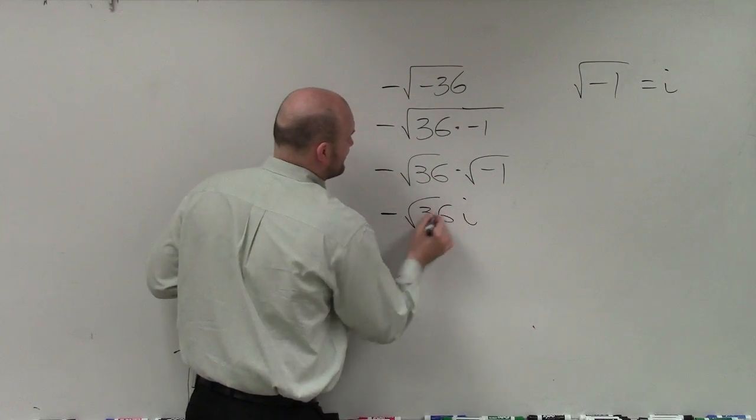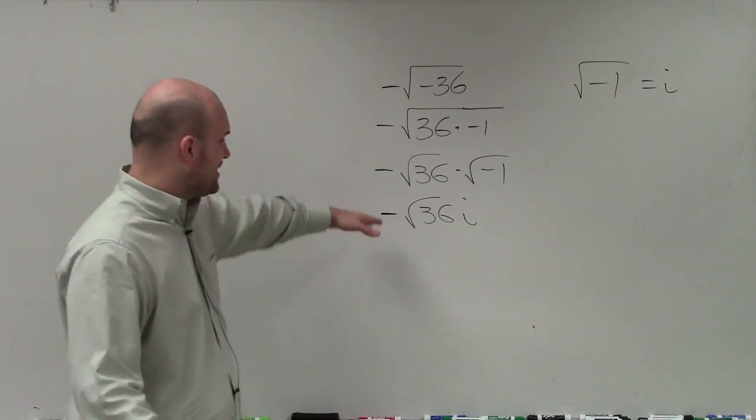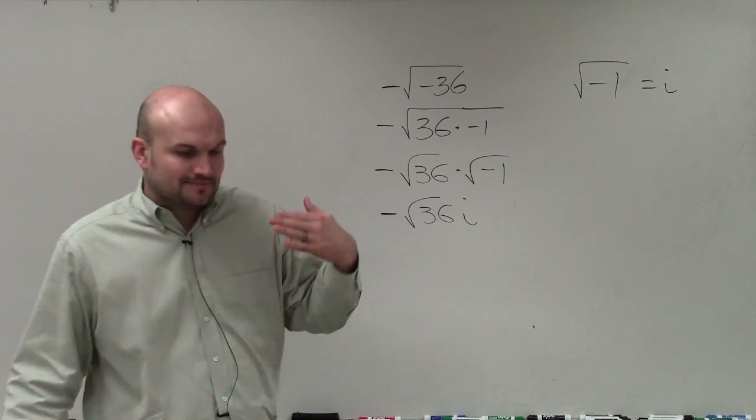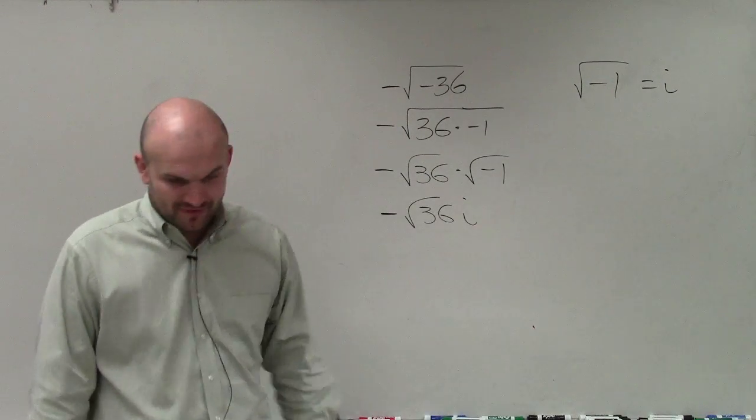And now I just need to focus on what is the square root of 36, and I'm going to multiply that value times negative, or you can think of that as negative 1 times the square root of 36.